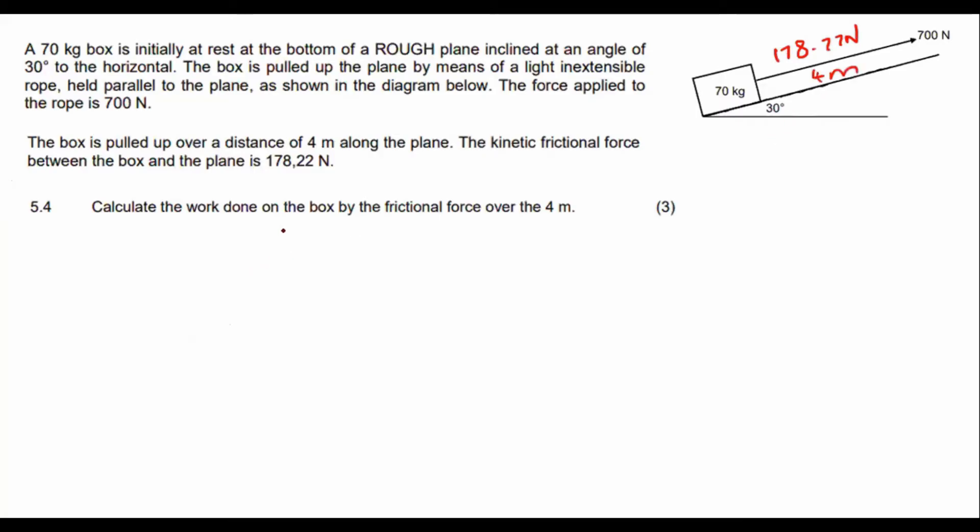Four meters. Calculate the work done on the box due to the friction force. Okay, so we know that work is equal to F delta X cos theta. That is the basic formula for work. And that will always be given to you on the formula sheet. Now, they only want the work done due to friction. So what we do is we can put the force of friction over here, delta X cos theta. So the force of friction is 178.22, 178.22. The distance that we are moving up the slope is 4 meters. Now, not cos 30, guys. That is not the way work works.